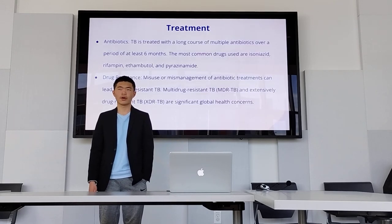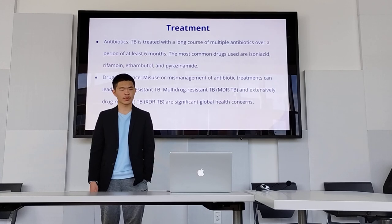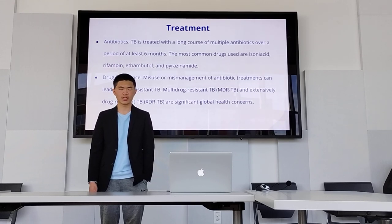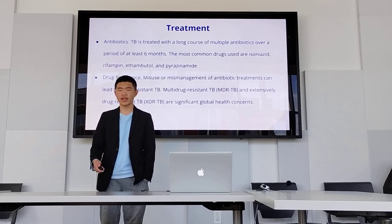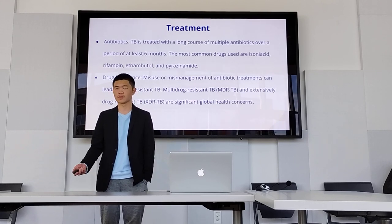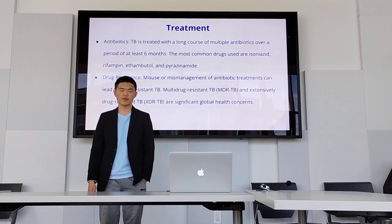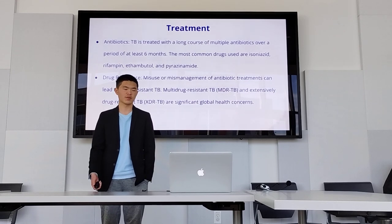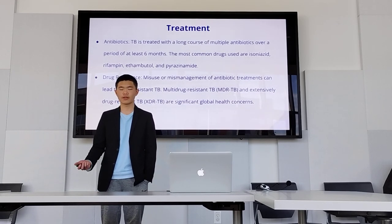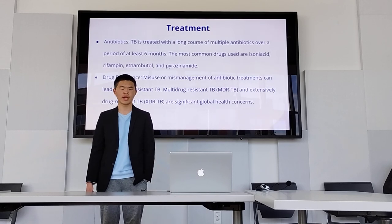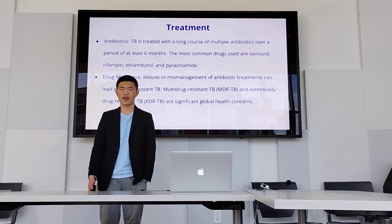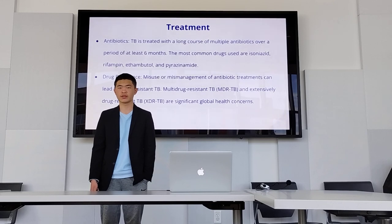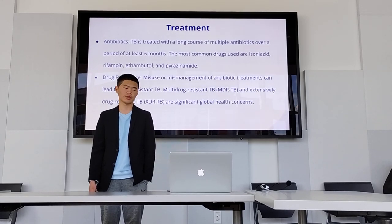To treat TB, we use antibiotics. Some common drugs are isoniazid, rifampin, ethambutol, and pyrazinamide. These antibiotics have a pretty long course of treatment of at least six months. Since we've been misusing and mismanaging some antibiotic treatments, we've had to deal with multidrug-resistant and extensively drug-resistant TB. These are very significant problems because TB is pretty easily spread, and drug-resistant forms could be fatal.